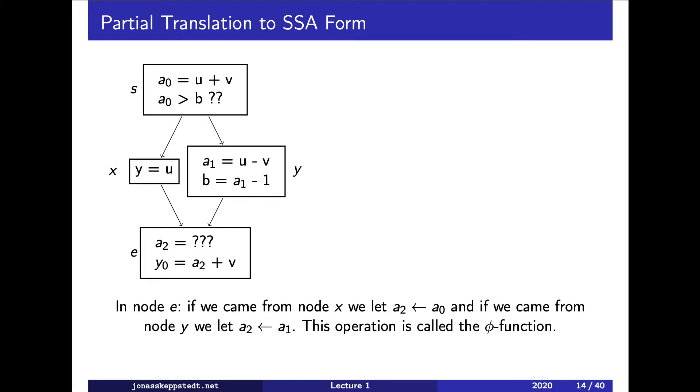Let me show an example. So here we have, ignore the subscripts. So here we have an assignment to a and here we have another assignment to a. And so what we do here is that we create a new variable for each assignment to a.